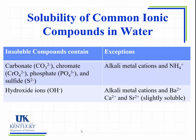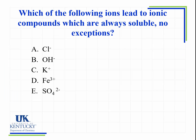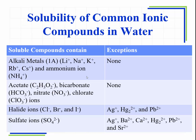Now let's practice using them. First question: which one of these ions leads to an ionic compound that is always soluble with no exceptions? Stop and find it. Hopefully you picked C. The others have exceptions, and there's no rule for iron at all — but we find that potassium has no exceptions. Here it is: always soluble, no exceptions.